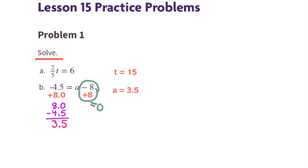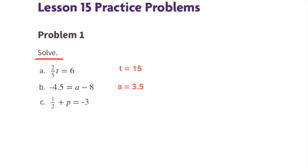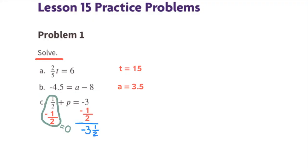The value for a is 3.5. Part c: one half plus p equals negative three. To get p by itself, we subtract one half from both sides. The left side gives us p, and on the right side, negative three minus one half equals negative three and a half.